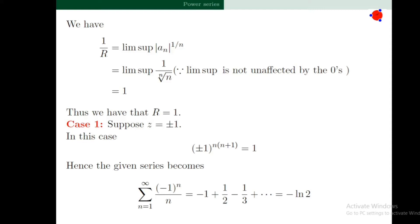This means the circle of convergence is the unit circle |z| = 1. Next, we discuss the behavior of the series at the points ±1, which are on the circle of convergence. Note that (-1)^(n(n+1)) is always 1, so when z = ±1, the power series becomes the sum of (-1)^n / n from 1 to infinity, which equals -1 + 1/2 - 1/3 + ... This alternating series converges to -ln 2.